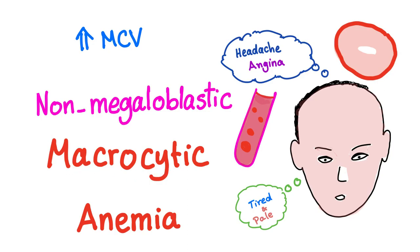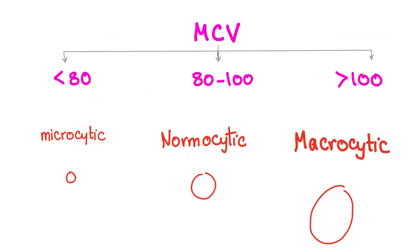And of course, since it's macrocytic, the mean corpuscular volume will be increased. The symptoms of anemia are the same no matter what: tired and pale. Sometimes angina, a murmur, headache, and exercise intolerance. Depending on MCV, the anemia is either microcytic — small cells, normocytic — normal size cells, or macrocytic — large cells.